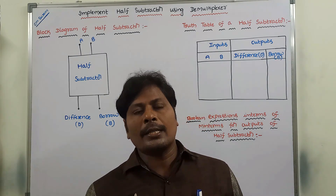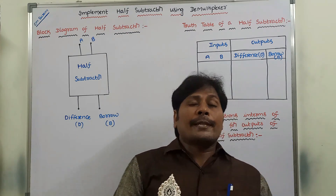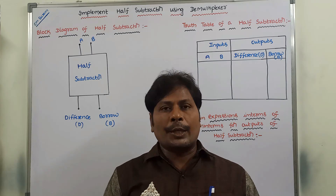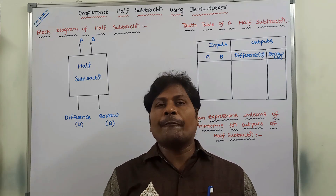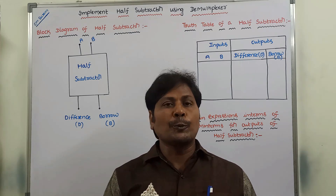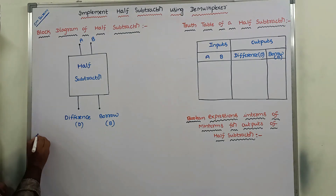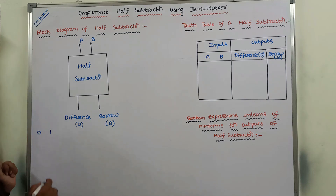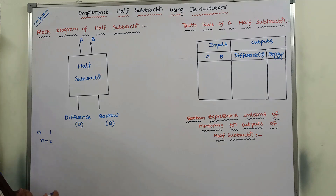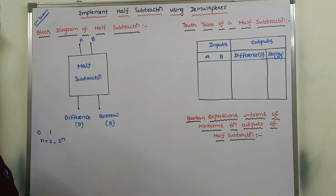A half subtractor is a combinational circuit that is used for performing the subtraction operation between two bits. Suppose I am taking two bits, 0 and 1. With two inputs, how many number of possible input combinations are we getting? That is 2 power n number of possible input combinations.